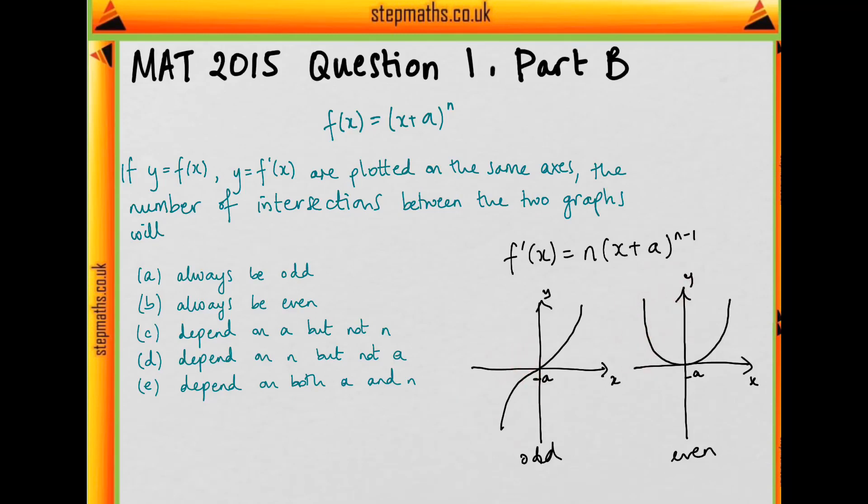So now finally we know that, for when x is only a little bit bigger than minus a, the inside of these brackets is going to be very small. And so f of x, because it's raised to a higher power, is going to be smaller than f dashed of x because it has a smaller power. So initially f will start off smaller than f dashed,